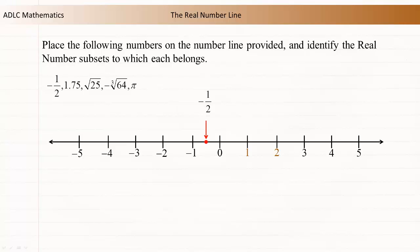1.75 sits between 1 and 2 and is located closer to 2. The square root of 25 is 5. The negative cube root of 64 is negative 4. Pi sits between 3 and 4 and is located closer to 3.